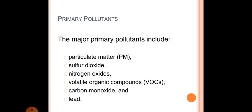Secondary pollutants are which are produced in the atmosphere when certain chemical reactions take place among primary pollutants. The major primary pollutants include particulate matter, sulfur dioxide, nitrogen oxides, volatile organic compounds, carbon monoxide and lead.